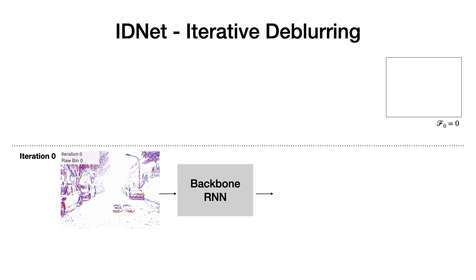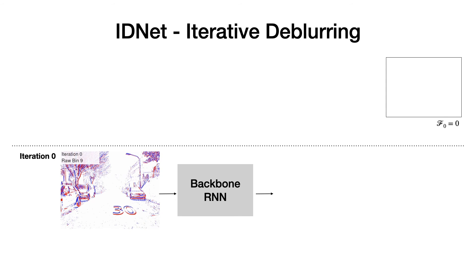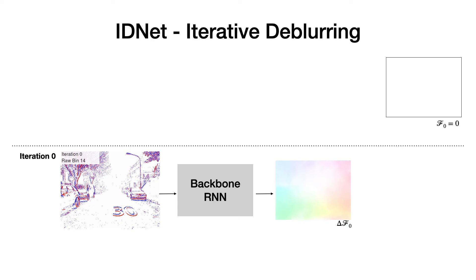At the beginning of our iterative de-blurring scheme, we initialize a zero flow and process the raw event bins through the backbone. A coarse flow is estimated from the raw event bins. We then add this delta flow F0 to arrive at F1.